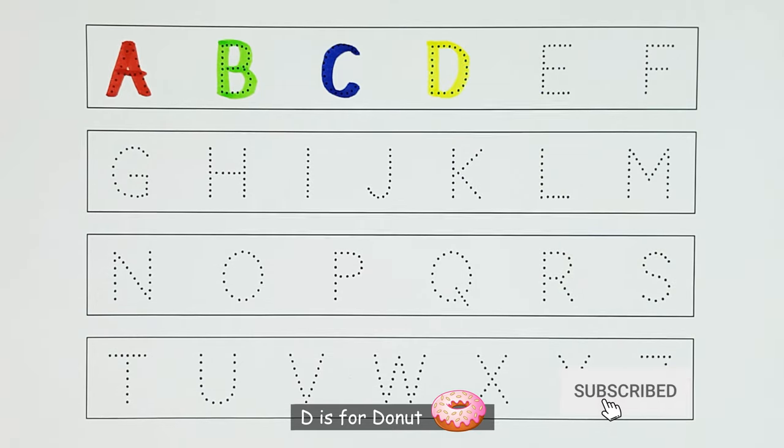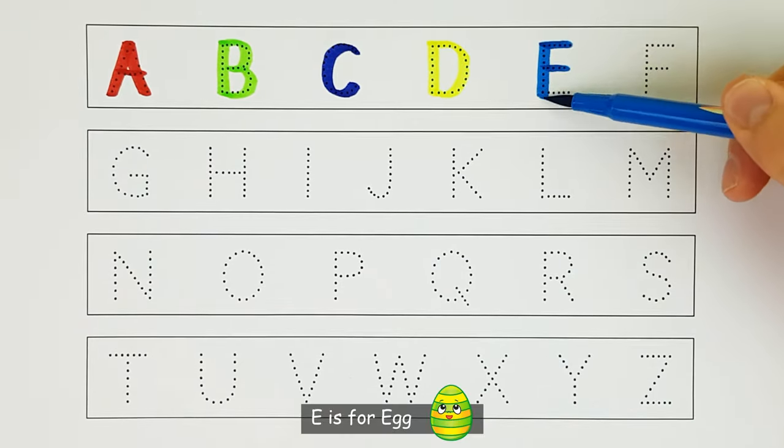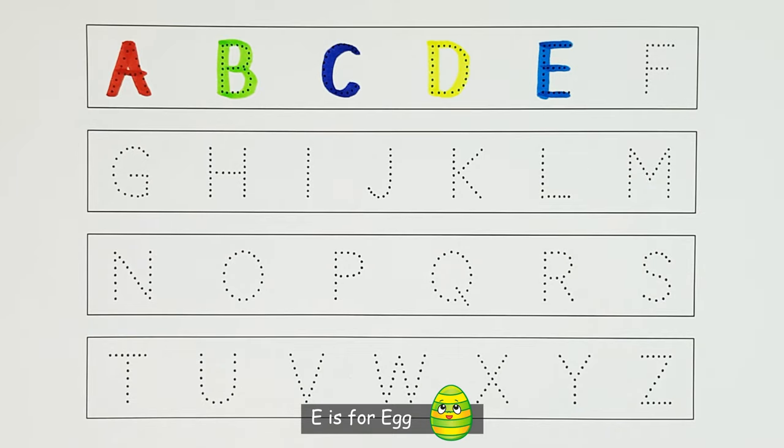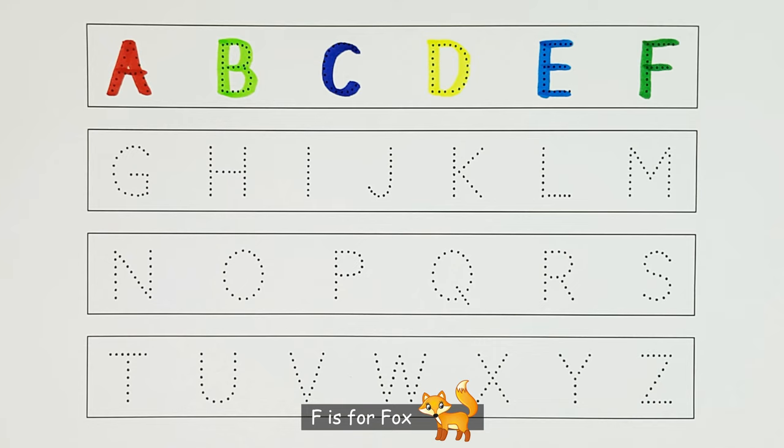D. D is for donut. D. E. E is for egg. E. F. F is for fox. F.